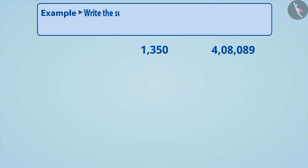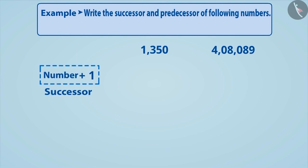Write the successor and predecessor of following numbers. Successor of a number can be obtained by adding 1 to that number. Similarly, predecessor of a number can be obtained by subtracting 1 from that number.